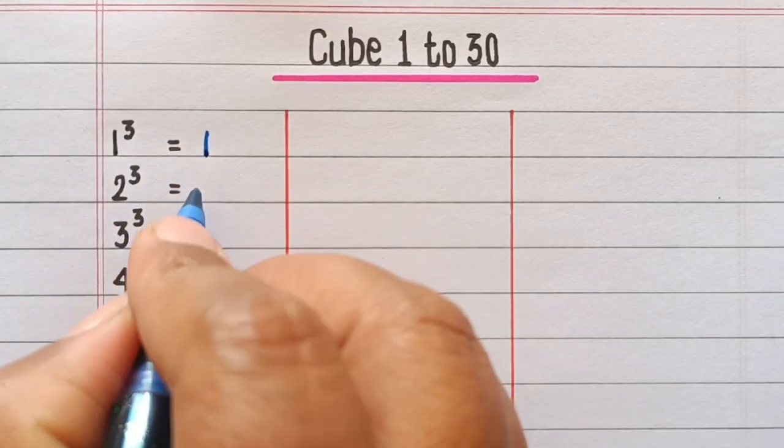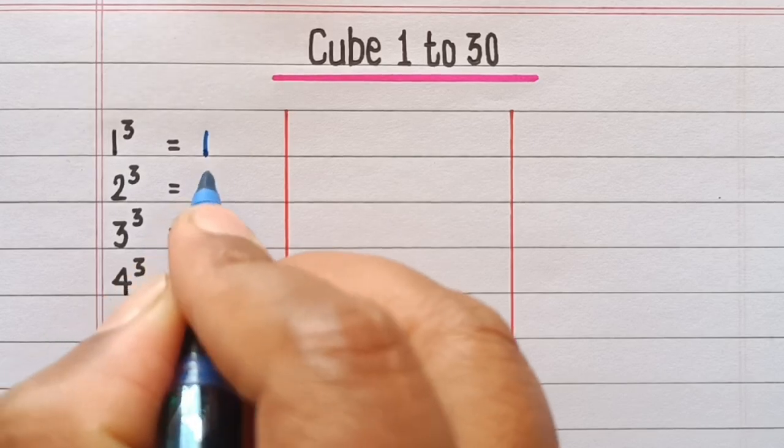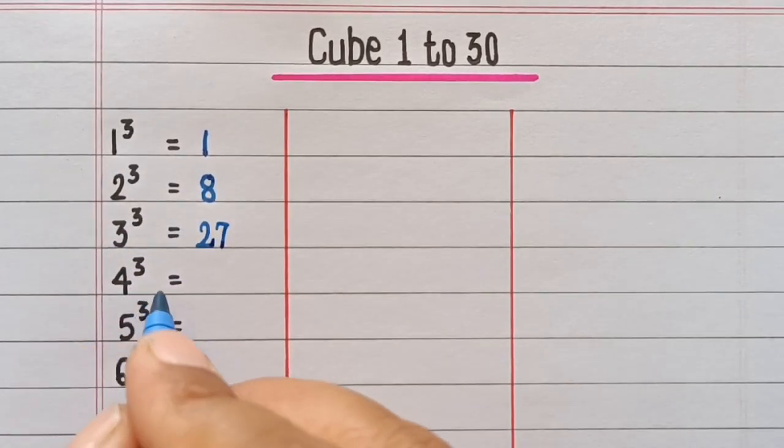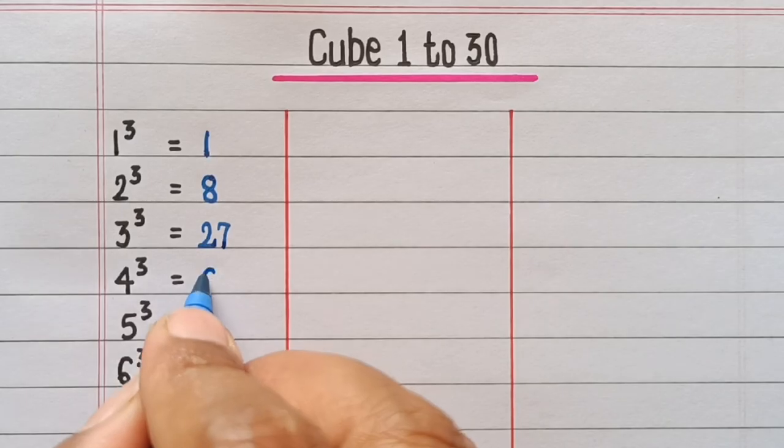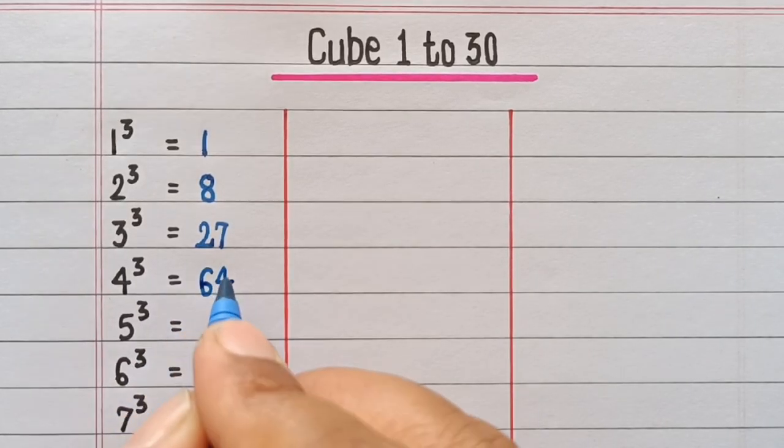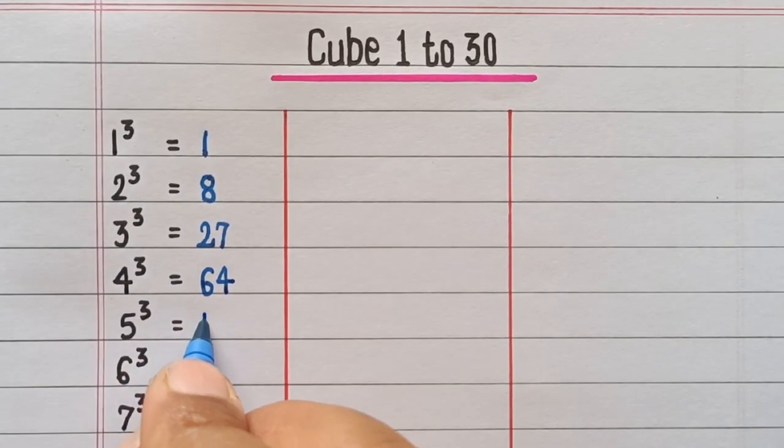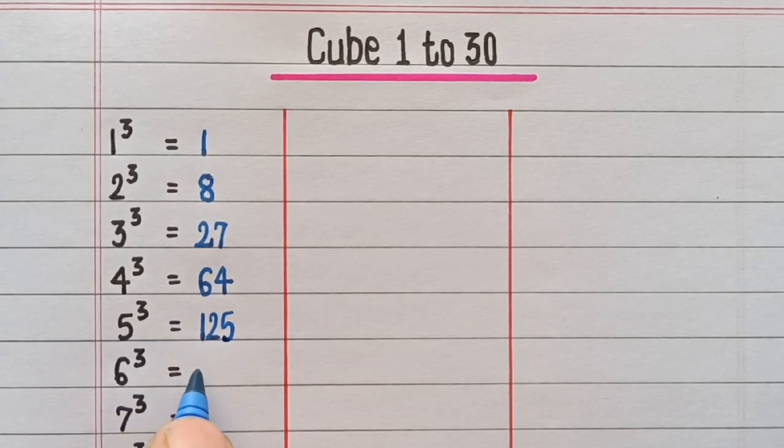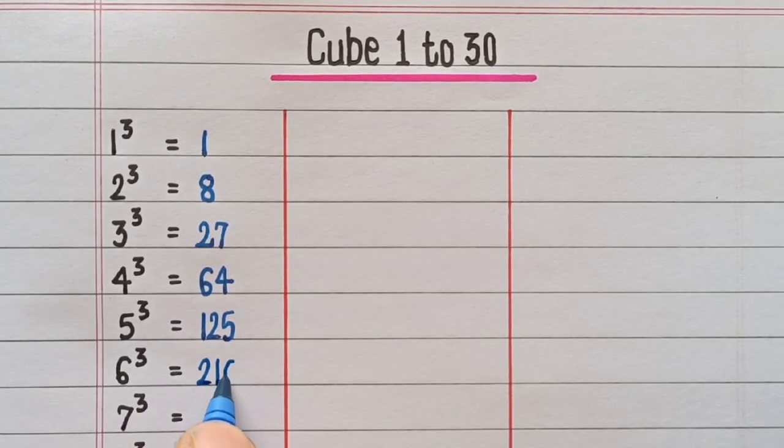Cube of 2 is 8. Cube of 3 is 27. Cube of 4 is 64. Cube of 5 is 125. Cube of 6 is 216.